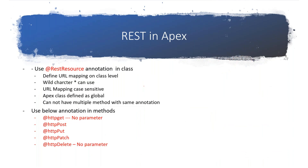Whenever you want to use REST services in Apex, you write a class — that's the first thing. Just like a test class is identified by the @isTest annotation, there are annotations we can use to annotate a class as a REST resource class. To develop a REST resource in Apex you annotate the class with @RestResource.